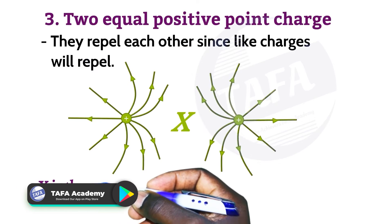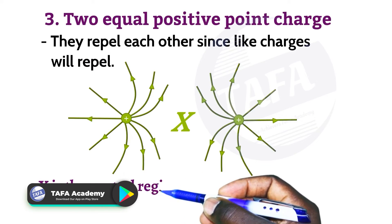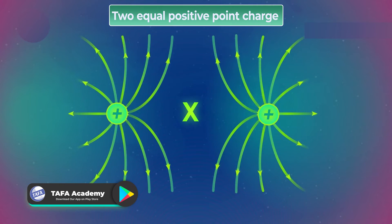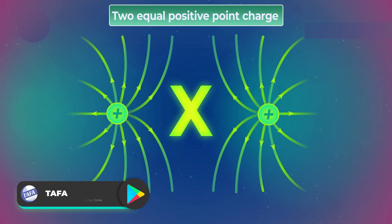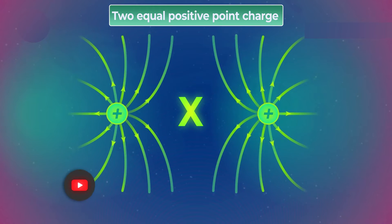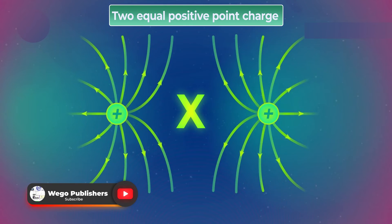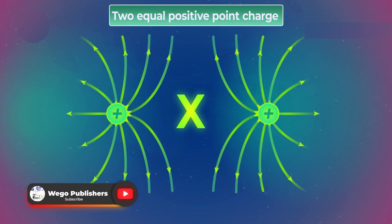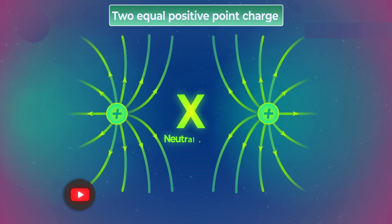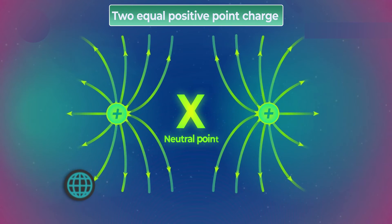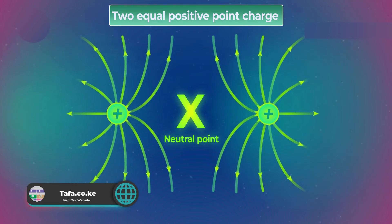It is good to note that at the center there is a point X. Point X is a region where we do not feel the electric field. This region is called a neutral point because there is no electric field around this region.